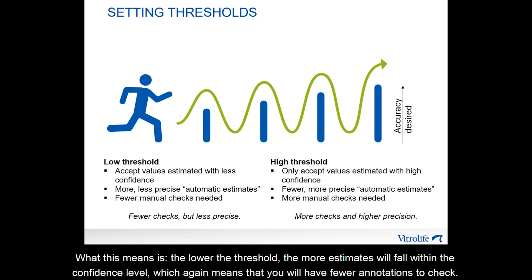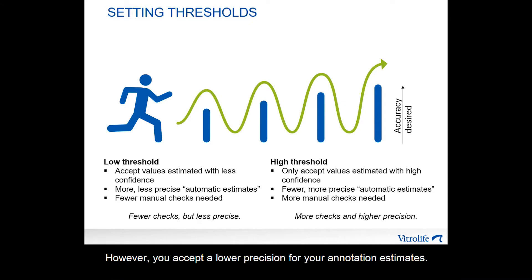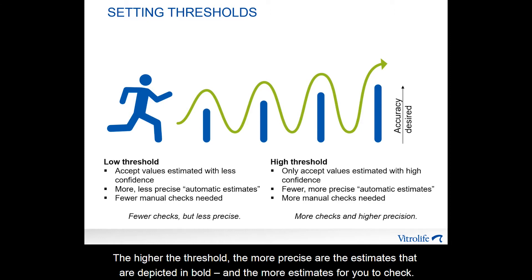The lower the threshold, the more estimates will fall within the confidence level, which means you will have fewer annotations to check. However, you accept a lower precision for your annotation estimates. The higher the threshold, the more precise are the estimates depicted in bold, and the more estimates you will need to check.